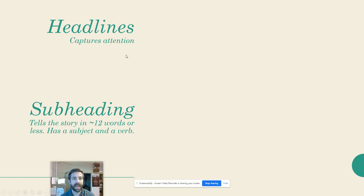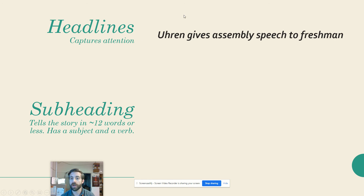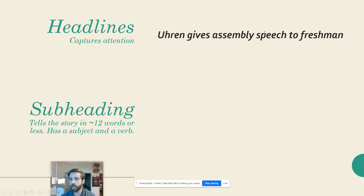We can do just a headline like: 'Earn gives assembly speech to freshmen.' That's the story — Principal Earn talked to the freshmen at their freshman assembly. I've got the who, I've got the what, I've got the where, at least, because we know it was an assembly. We don't quite have the why or the how, but I cover most of my five W's. I've got a subject — Mr. Earn — and I've got a verb — gives. That works.